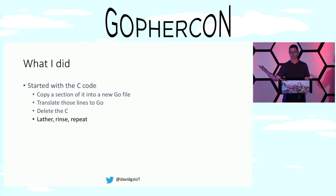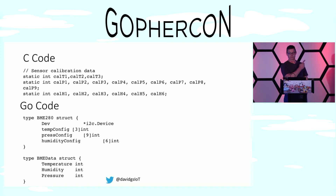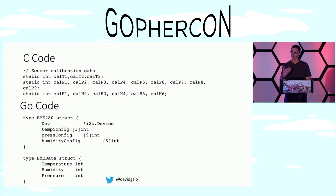I did that line by line until I had a driver in Go that actually worked. It kind of looked like — I'm absolutely not going to endorse the C code the other guy wrote because that's bad, even I know that. And I may or may not endorse the Go code because that may be bad as well, but it works. I wrote two drivers: one for a temperature, humidity, and pressure sensor, and one for an industrial CO2 sensor.